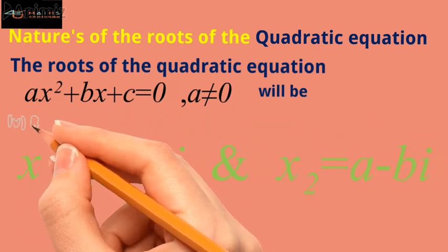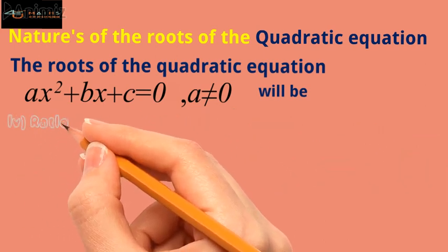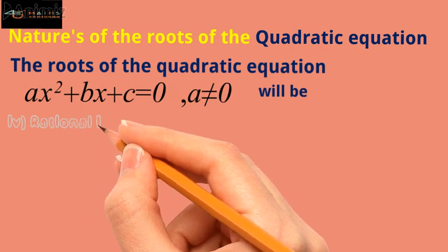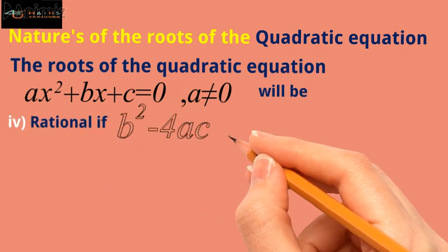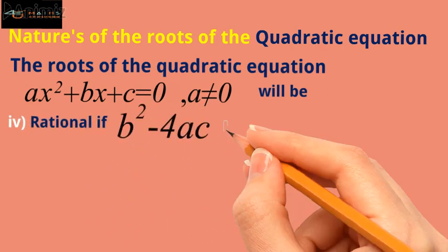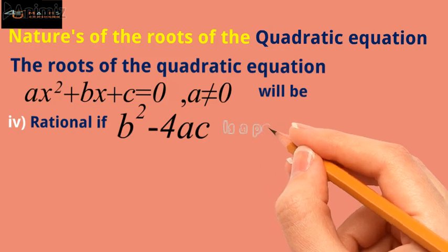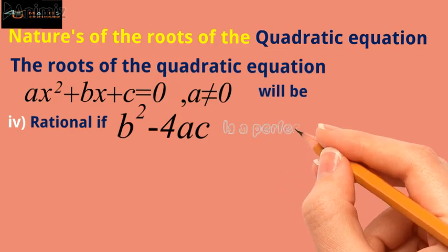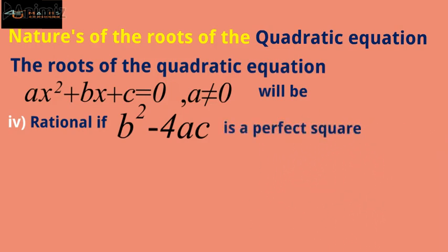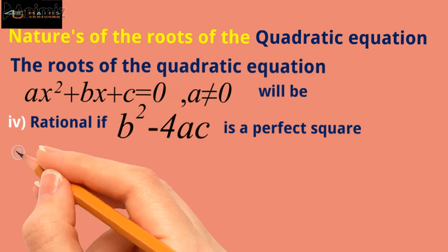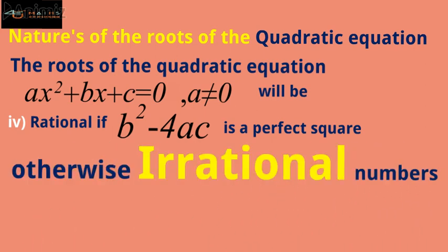Case four — the roots will be rational if b squared minus 4ac is a perfect square. Otherwise, the roots of the quadratic equation will be irrational.